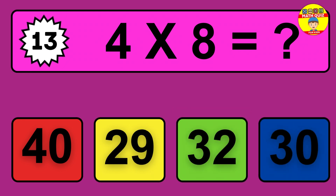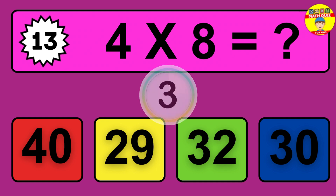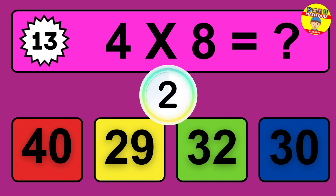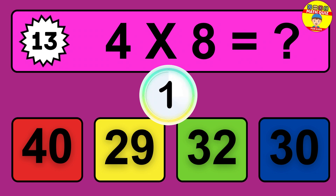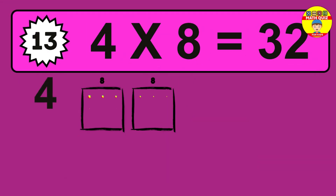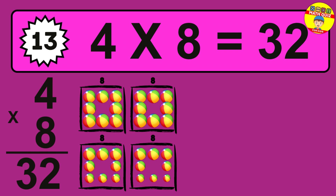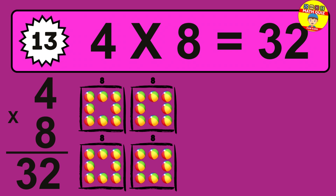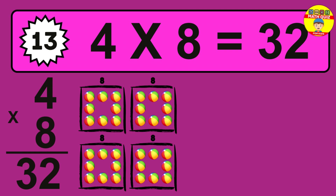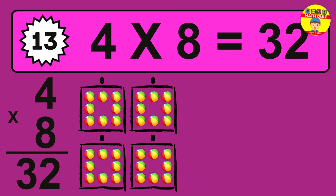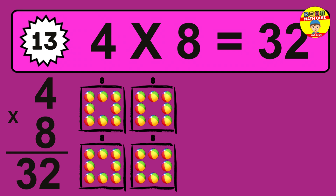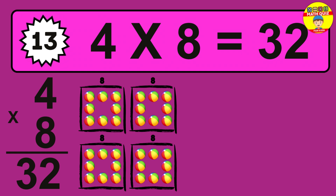Question 13. 4 times 8 equals what? The answer is 4 times 8 is 32. To calculate, we have 4 groups with 8 balls each one. So how many balls do we have? 32 balls.